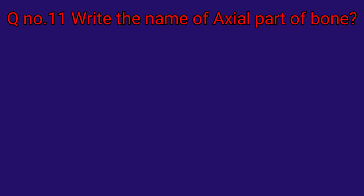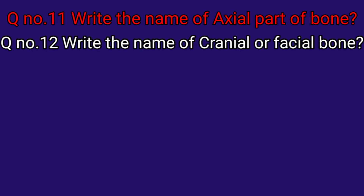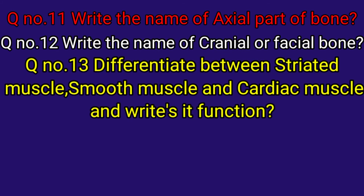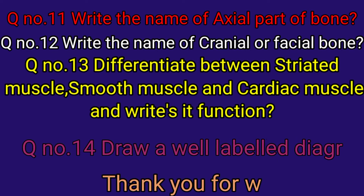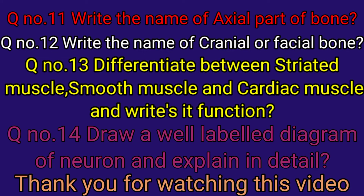Question number twelve: write the name of cranial and facial bones. Question number thirteen: differentiate between striated muscle, smooth muscle, and cardiac muscle, and write its function. Question number fourteen: draw a well-labeled diagram of a neuron and explain in detail.